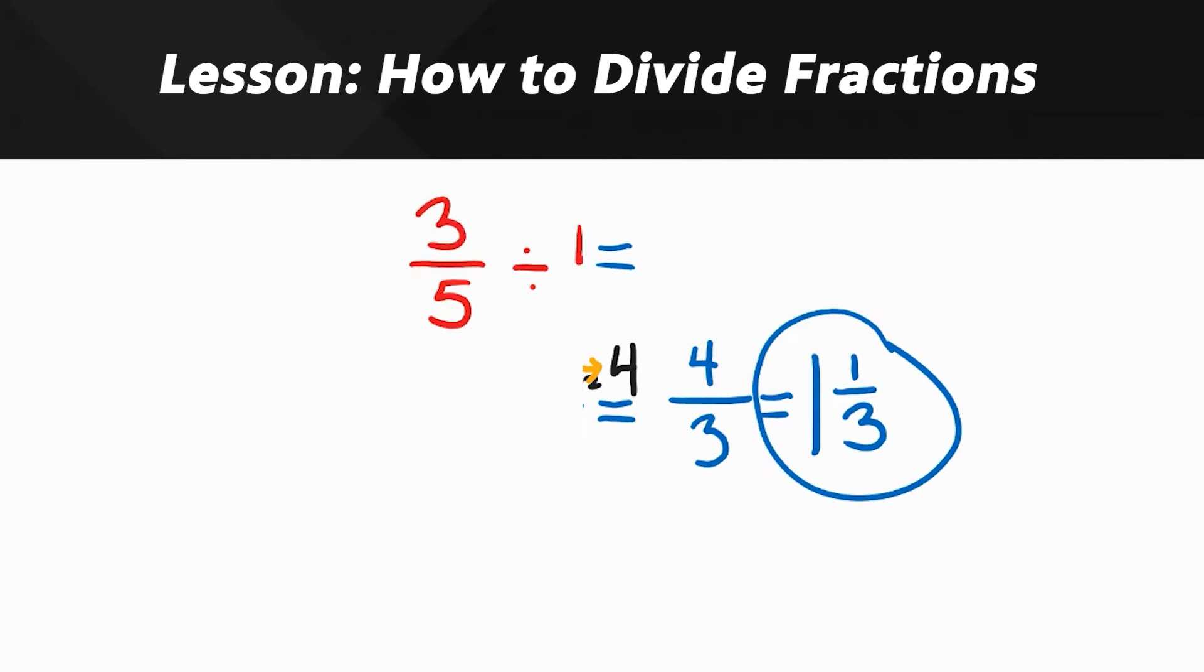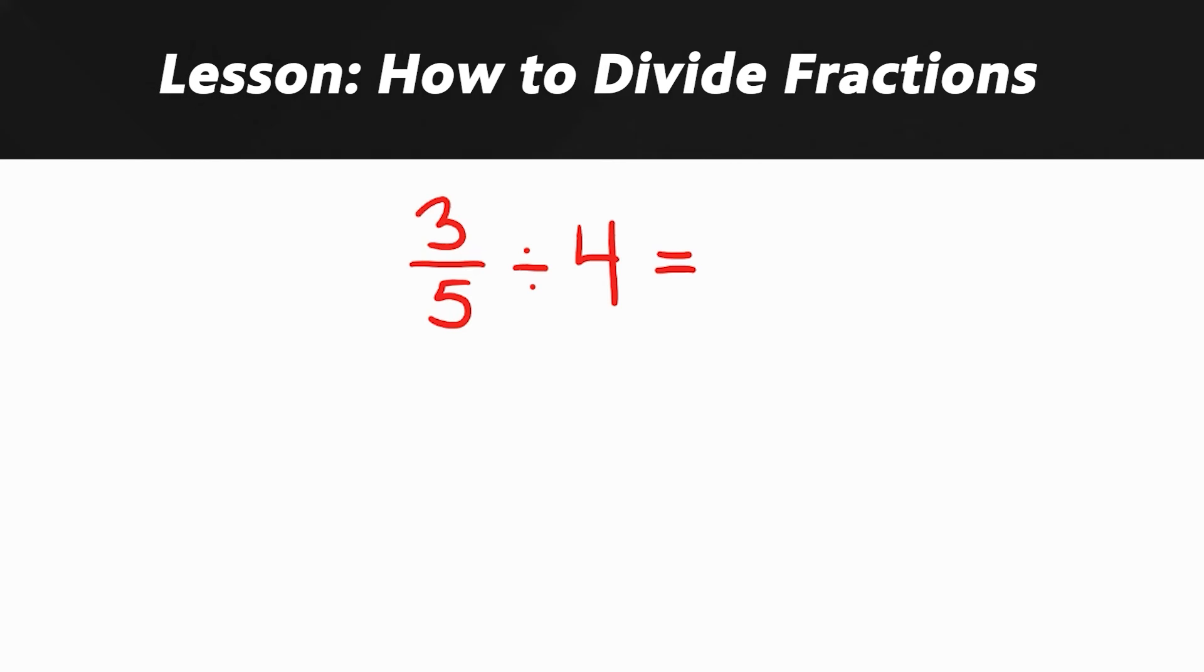Let's do another one, this time with a whole number. Here we've got three-fifths divided by four. We need to multiply by the reciprocal. That's three-fifths times the reciprocal of four. Now remember that four is the same as four over one, so the reciprocal of that would be what? One over four.